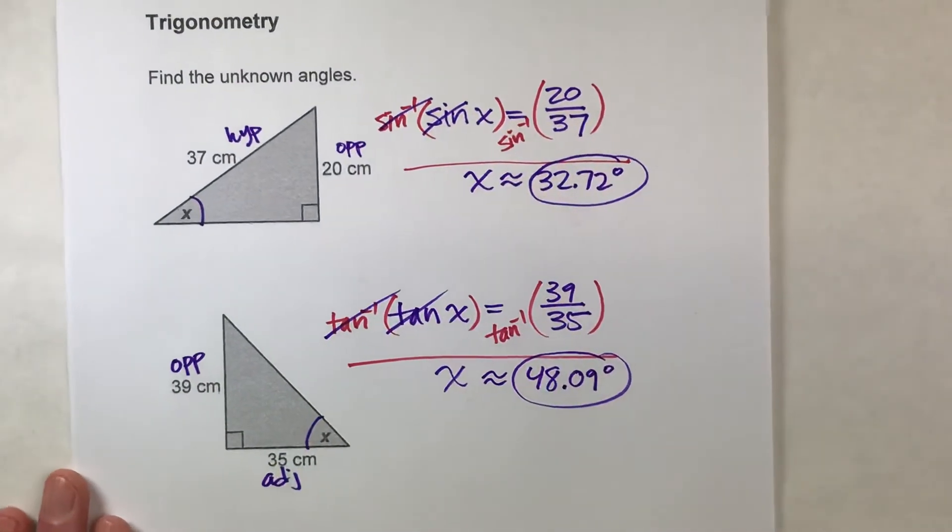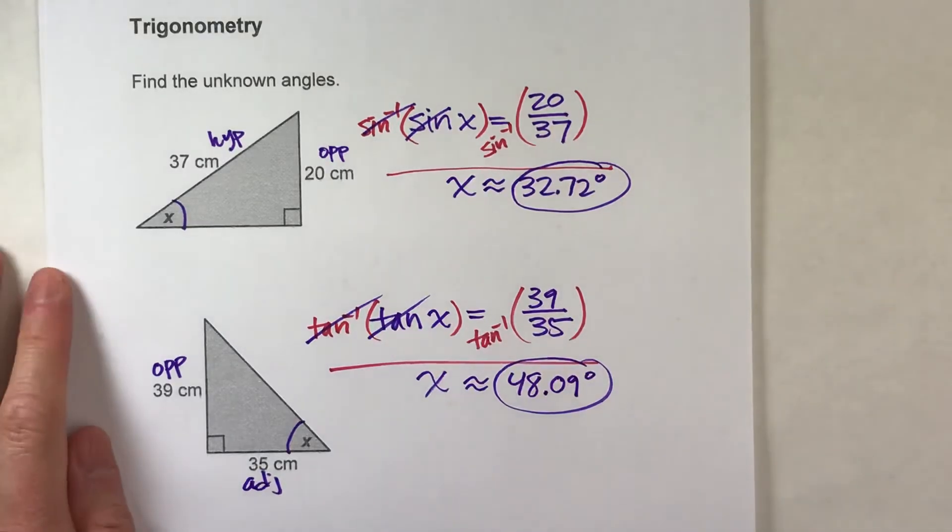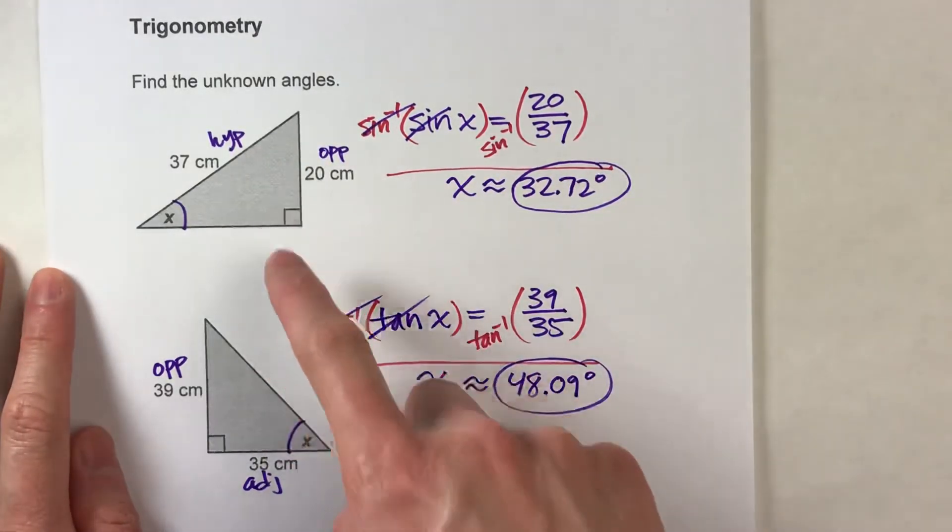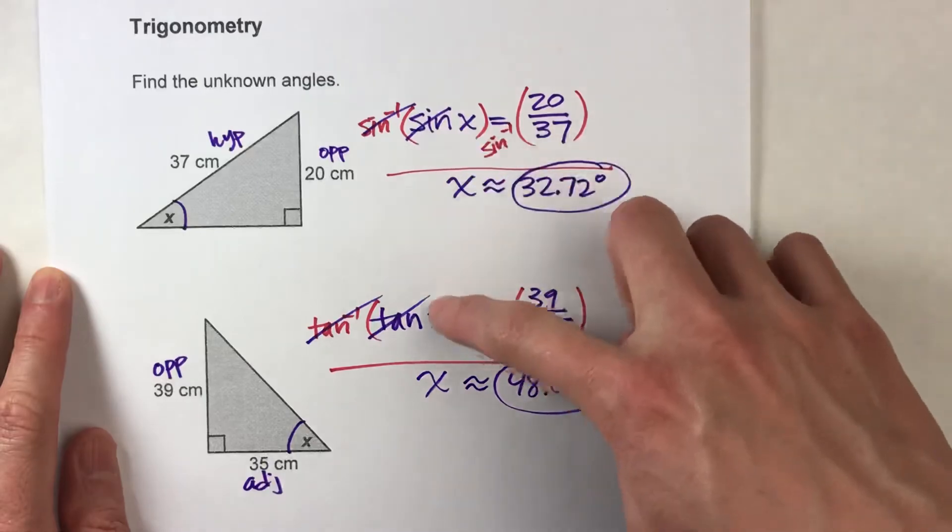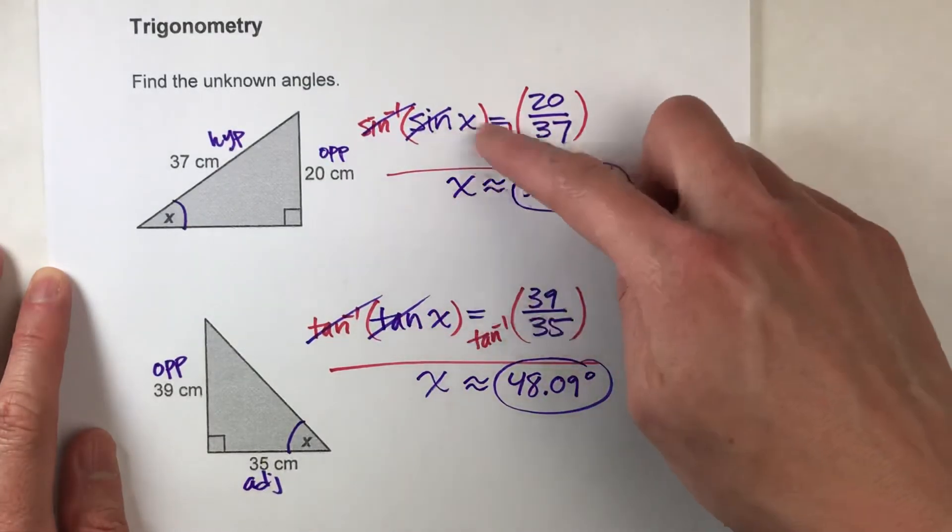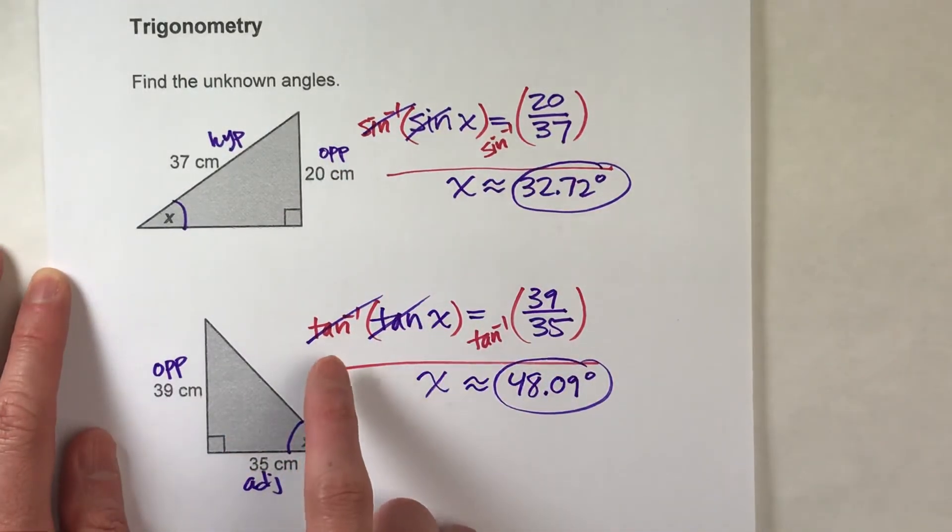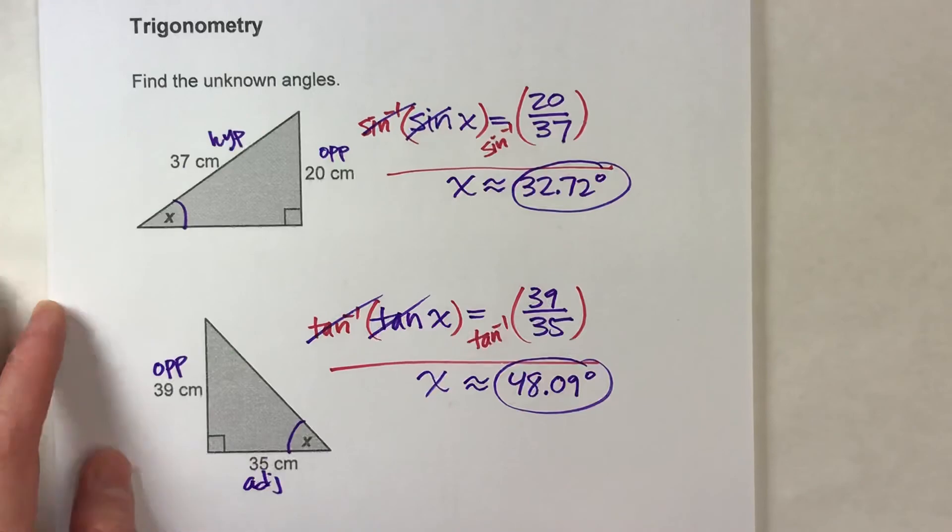So the key to this is, any time you're trying to find the missing angle using trigonometry, we're going to have to undo the trig ratio in order to figure out what x is, that angle. And that's what the inverse sine, inverse cosine, and inverse tangent are all about.